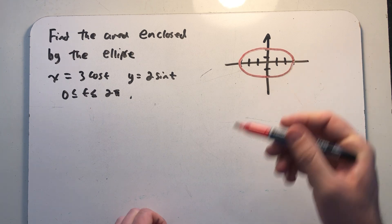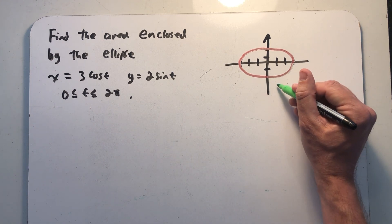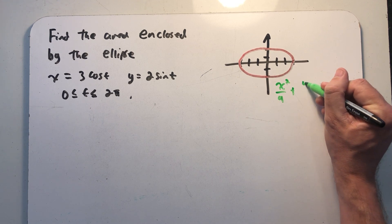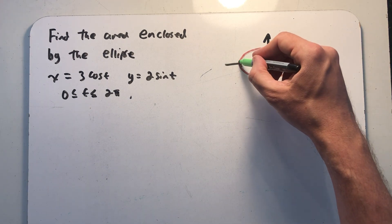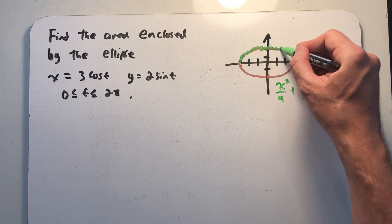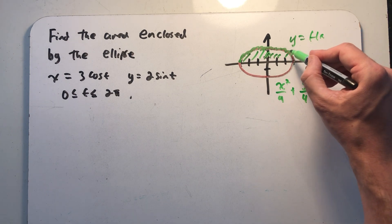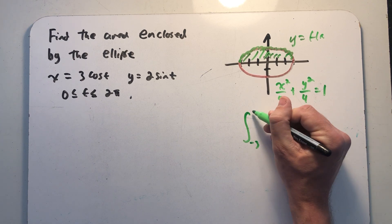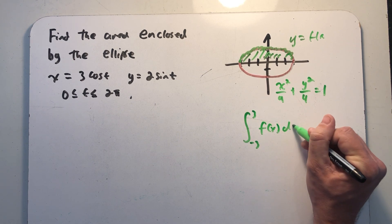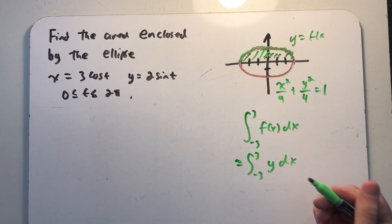We're looking for the area bound by this ellipse. One approach would be to eliminate the parameter and rewrite this as a rectangular equation. If we know a bit about ellipses, we can quickly write x squared over 9 plus y squared over 4 equals 1. We could solve for y and integrate y equals f of x to find the area between the curve and the x-axis.